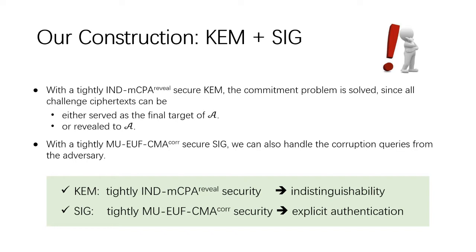Our generic construction of two-pass AKE uses KEM and SIG as building blocks. We prove that the security of AKE can be tightly reduced to the IND-mCPA-reveal security of KEM and the MU-UF-CMA-corrupt security of SIG. More precisely, with a tightly IND-mCPA-reveal secure KEM, the commitment problem is solved, since all challenged ciphertexts can be either served as a final target of A or revealed to A. Meanwhile, with a tightly MU-UF-CMA-corrupt secure SIG, we can also handle the corruption queries from the adversary.